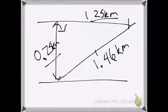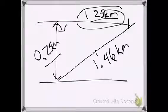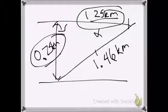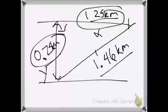The displacement has two components: 1.25 kilometers in the x-direction (downstream) and 0.75 kilometers in the y-direction (across the river). The total resultant displacement is 1.46 kilometers.